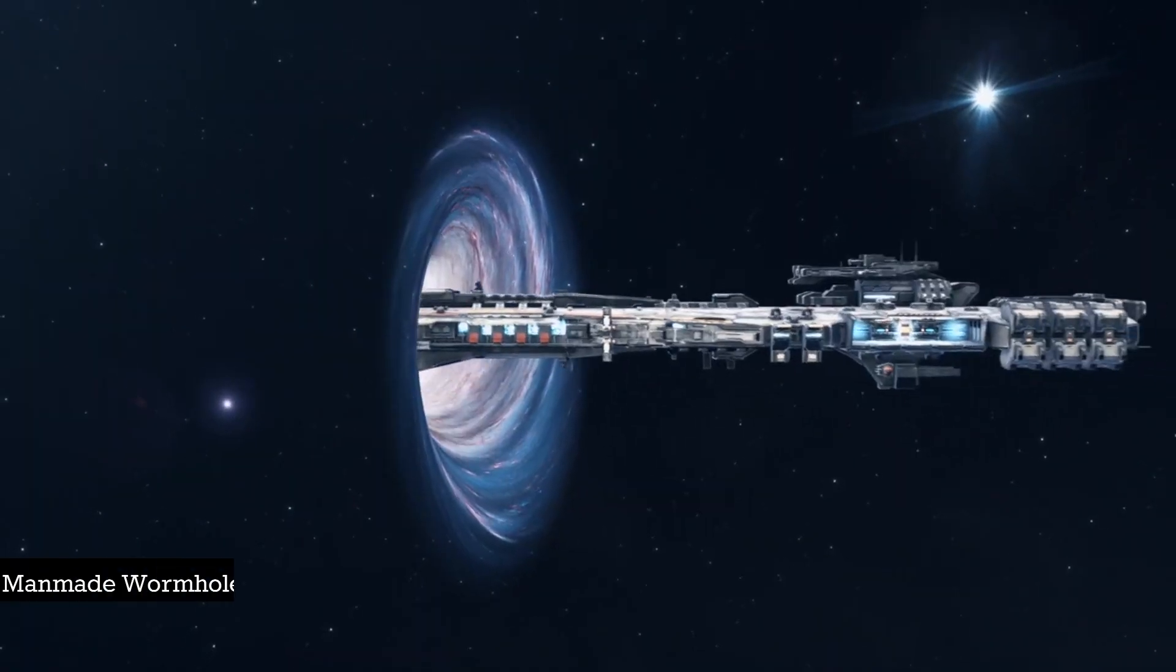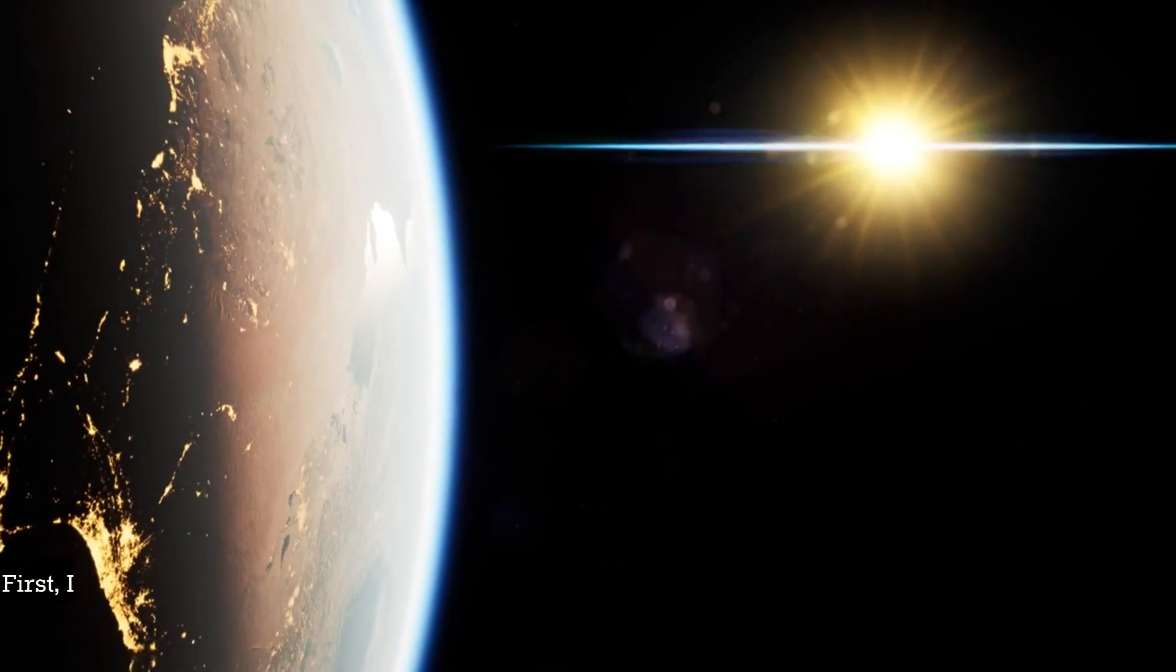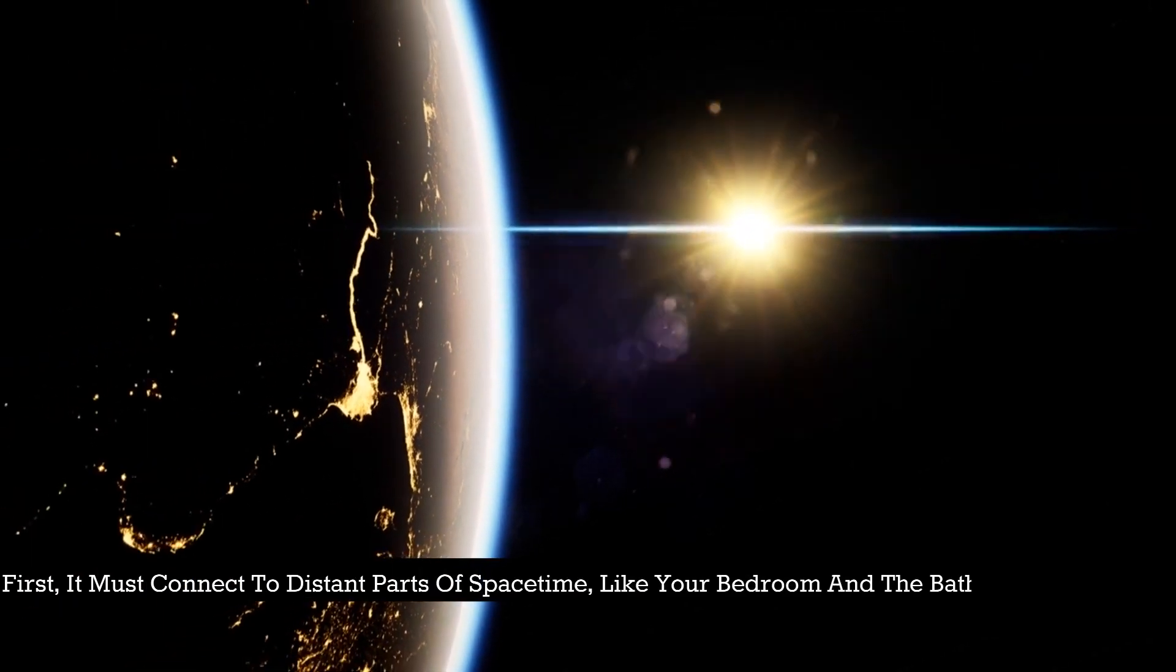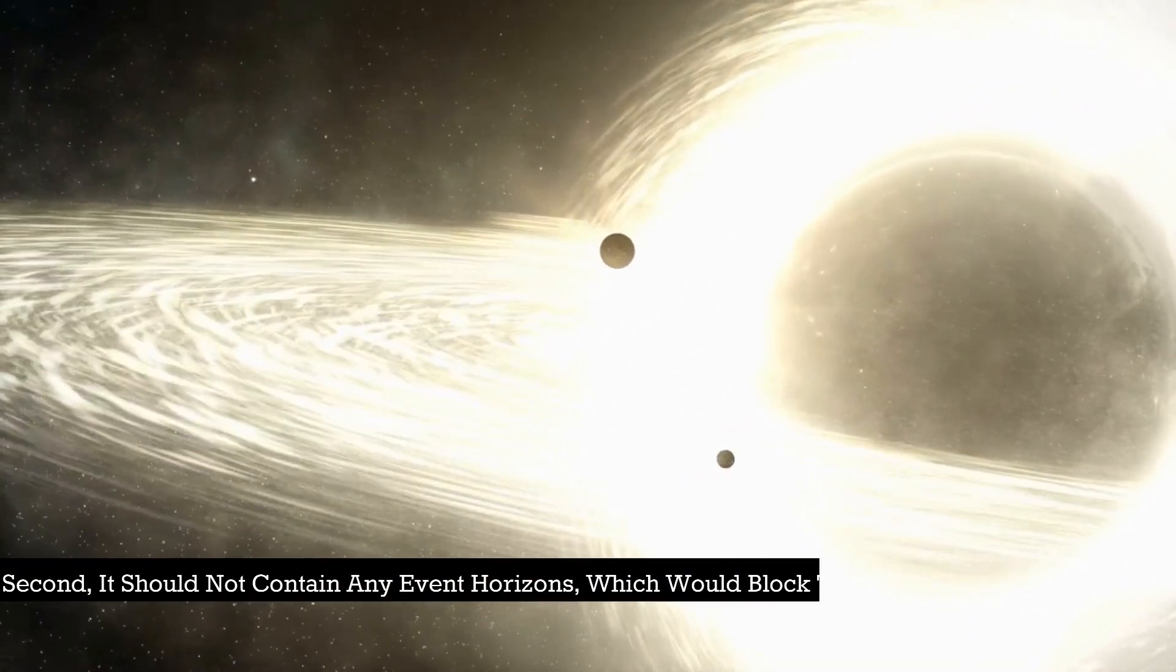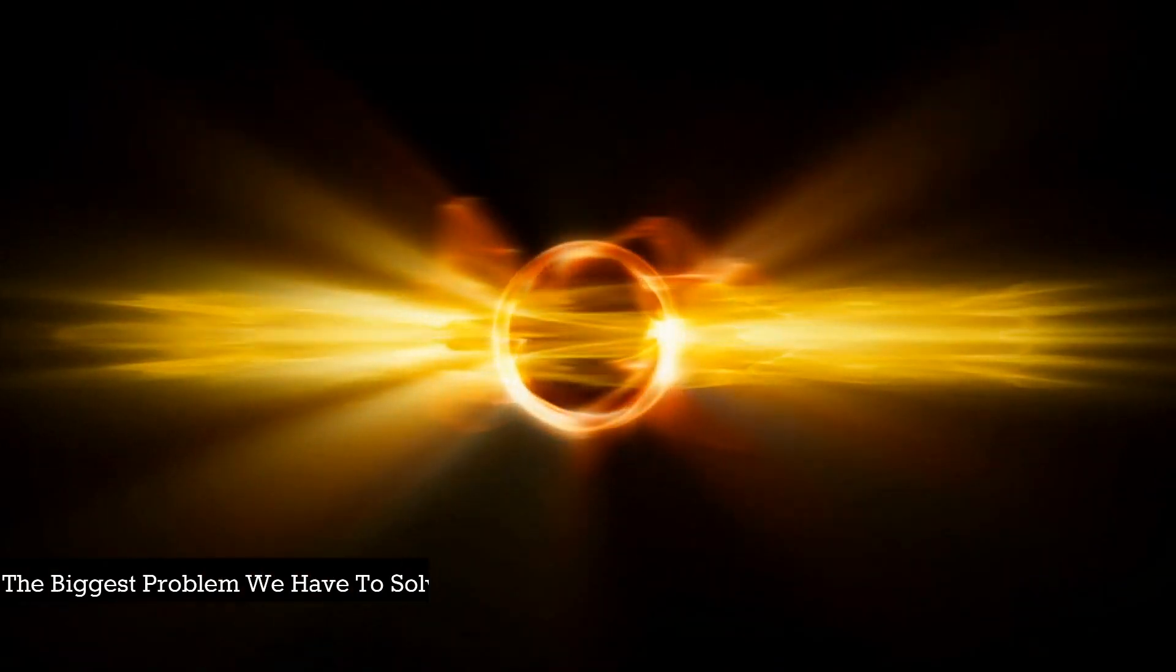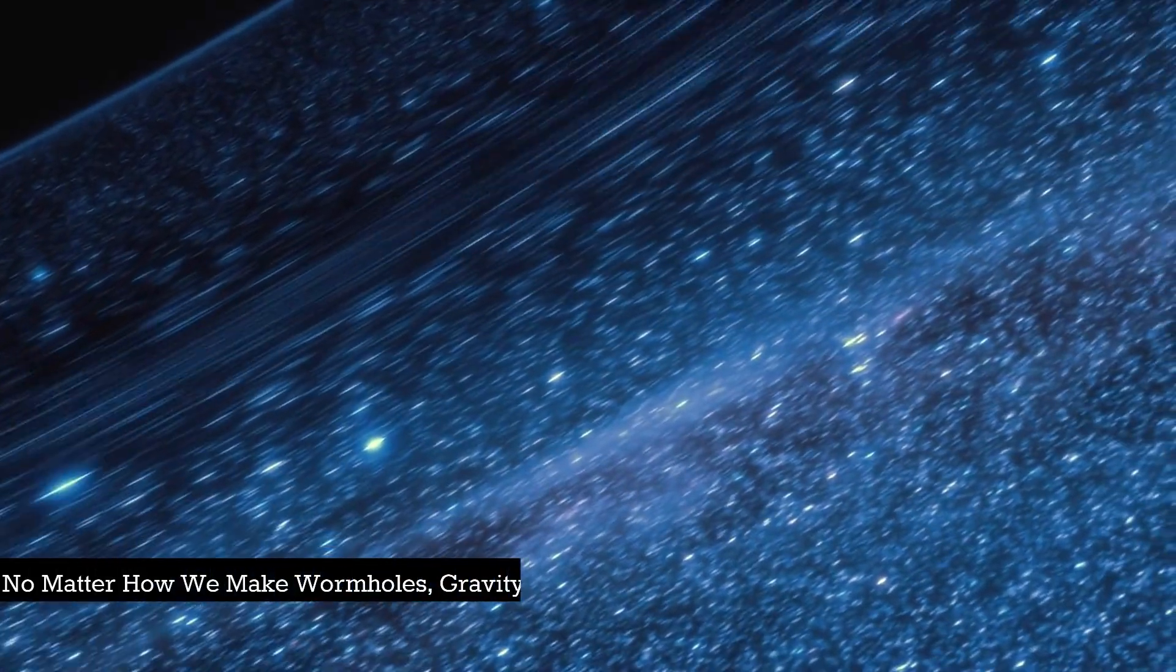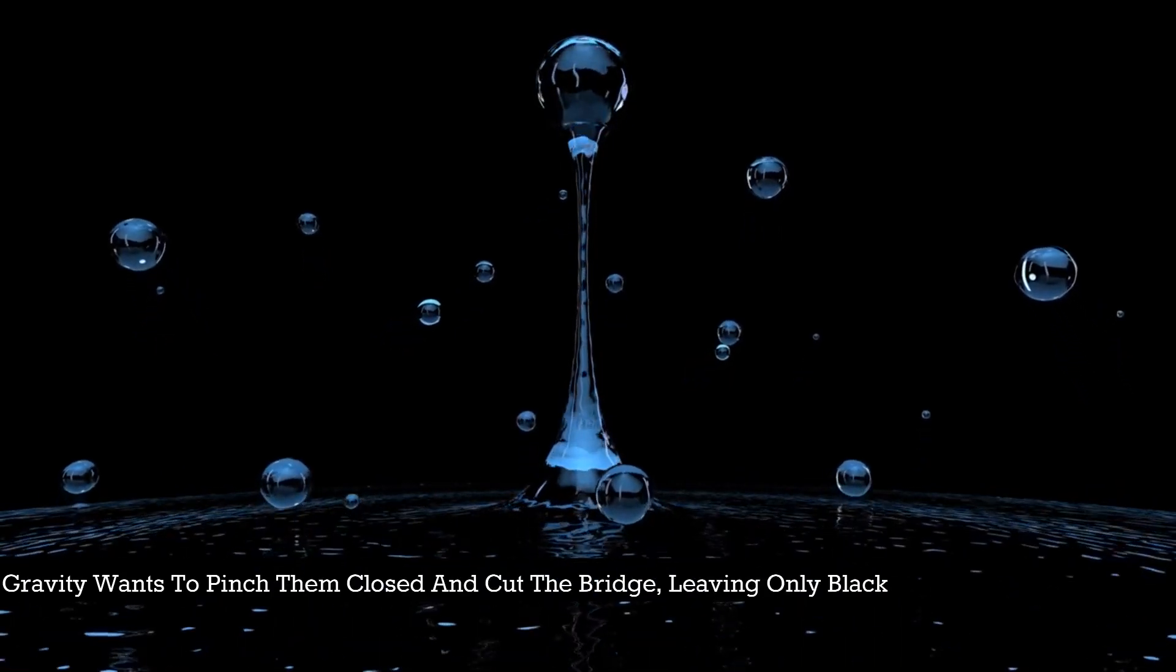Man-made wormholes. To be traversable and useful, there are a few properties we want a wormhole to have. First, it must connect distant parts of space-time, like your bedroom and the bathroom, or Earth and Jupiter. Second, it should not contain any event horizons which would block two-way travel. Third, it should be sufficiently sized so that the gravitational forces don't kill human travelers. The biggest problem we have to solve is keeping our wormholes open. No matter how we make wormholes, gravity tries to close them. Gravity wants to pinch them closed and cut the bridge, leaving only black holes at the ends.